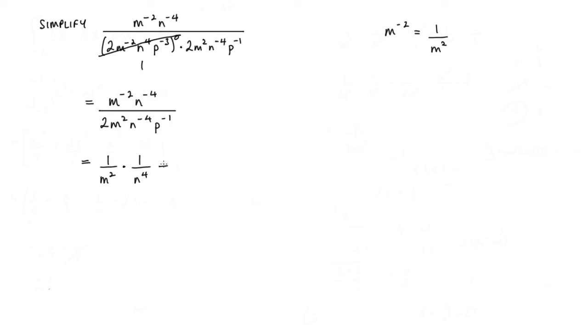That whole thing is divided by 2m squared. Now I'm going to write the 2m squared and just place that over 1. Now that is multiplied by n to the minus 4, and we can write that as 1 over n to the power of 4. And multiplied by p to the minus 1, which is 1 over p.